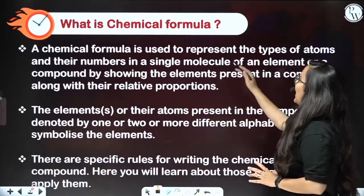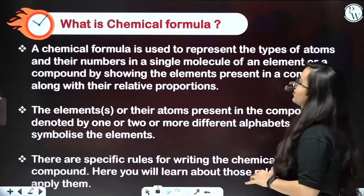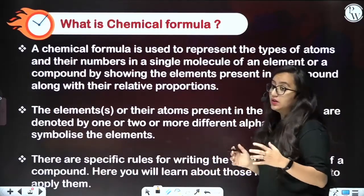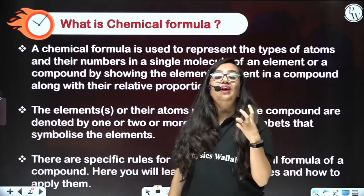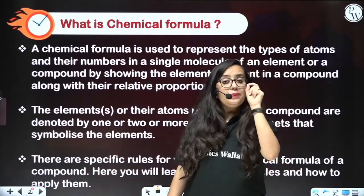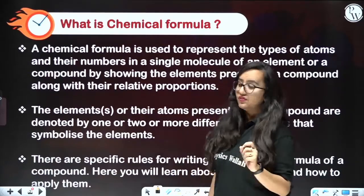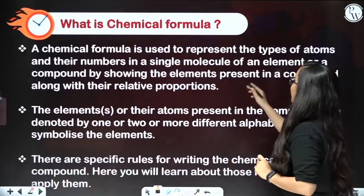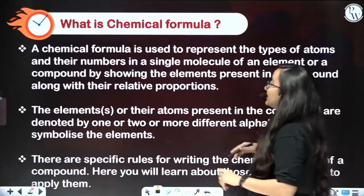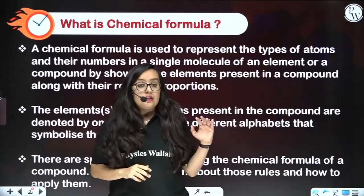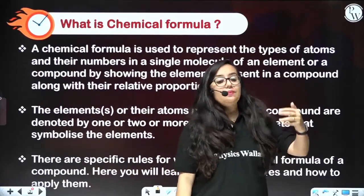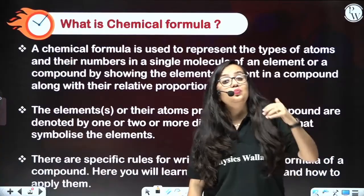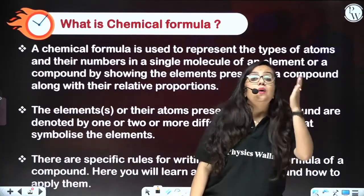A chemical formula is used to represent the types of atoms and their numbers in a single molecule — it denotes how many atoms are present in that particular molecule. Or it represents a compound by showing the elements present along with their relative proportion.